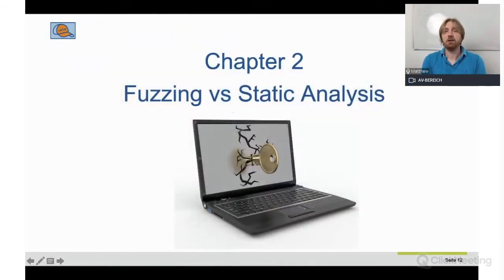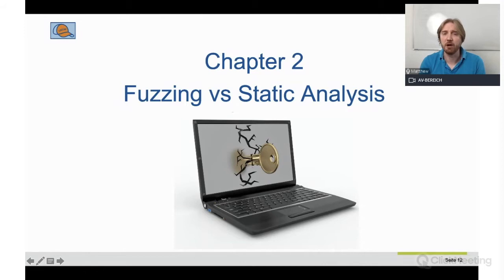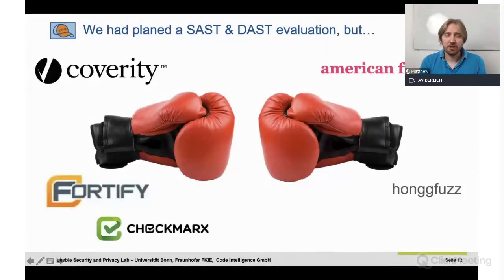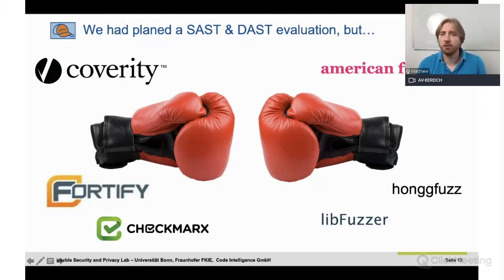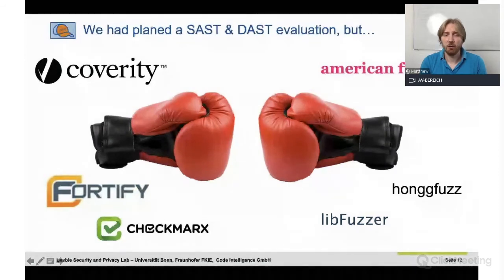We did a user study comparing modern fuzzing tools to what we considered the gold standard of security testing: static analysis. That's what we saw most in industry and academia being used to make software secure, whereas fuzzing is the up-and-coming tool, and we wanted to see the differences in usability. We had planned to do a really large study comparing all the big platforms. In static analysis, we found Coverity, Fortify, Checkmarx, and others. In fuzzing, all open source products: American Fuzzy Lop, HonggFuzz, and libFuzzer as the biggest representatives.